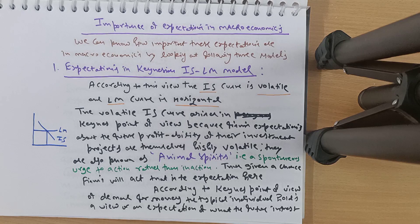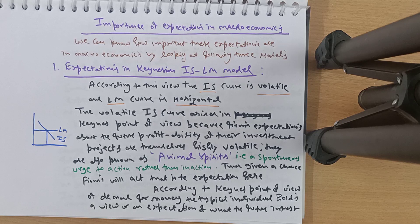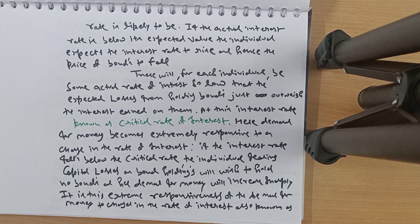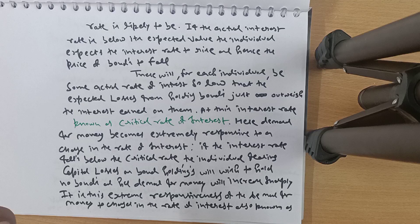According to Keynes, the demand for money depends on the typical individual's expectation of what the future interest rate is likely to be. Suppose an individual expects a particular rate of interest in the future, say 10%. If the actual interest rate is below that expected value — say currently 8% — the individual expects the interest rate to rise to 10%.